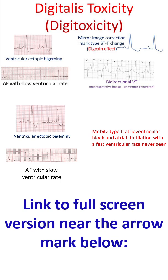Though life-threatening cardiac arrhythmias were the most important adverse effects seen with digitalis toxicity, the most common ones were anorexia and nausea. Ventricular bigeminy due to ventricular ectopics was the commonest arrhythmia of digitalis toxicity, though the most classical one was bidirectional ventricular tachycardia. Almost any form of cardiac arrhythmia can occur in digitalis toxicity except Mobitz type 2 atrioventricular block and atrial fibrillation with a fast ventricular rate.